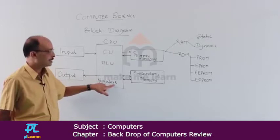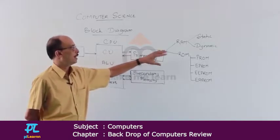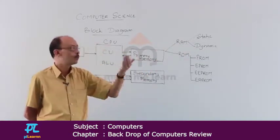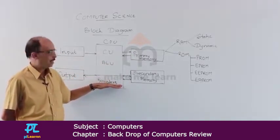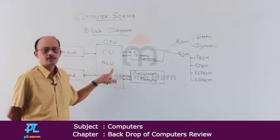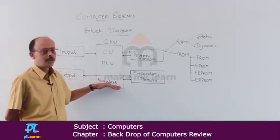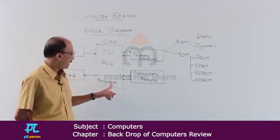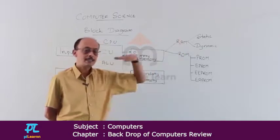Registers are also called scratch pad registers. When an instruction is to be executed, the required data is fetched from main memory and brought into the registers. The arithmetic and logic unit performs arithmetic and logical operations on that data, storing results temporarily in registers. After the instruction completes, the processed data is sent back to primary memory, that is random access memory, also called main memory.